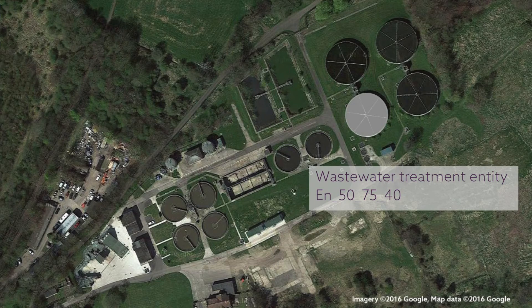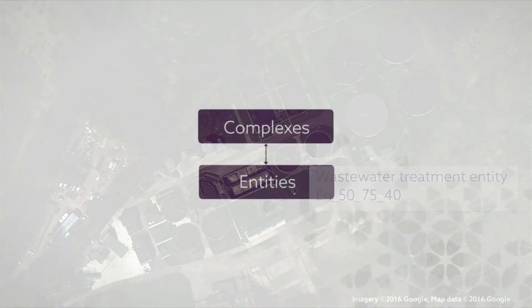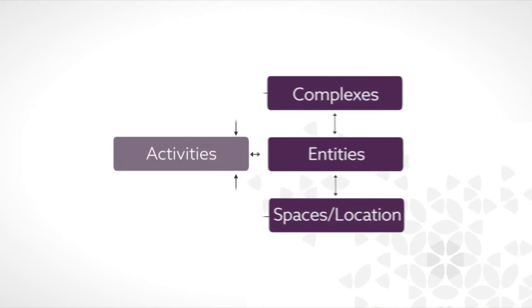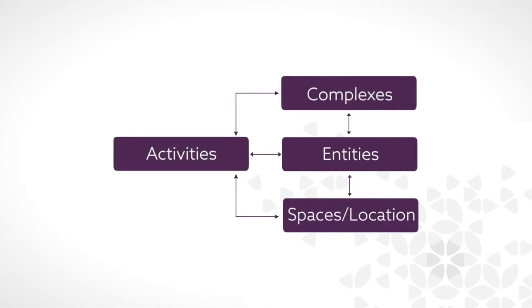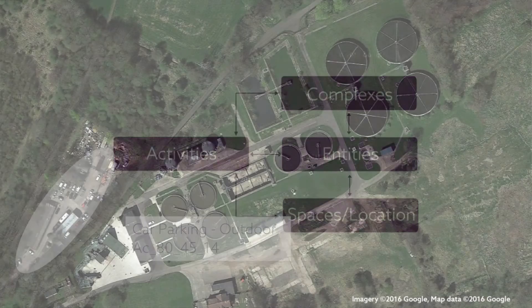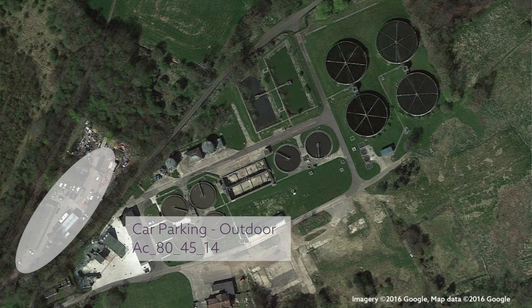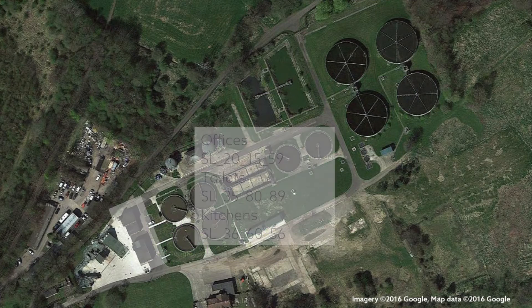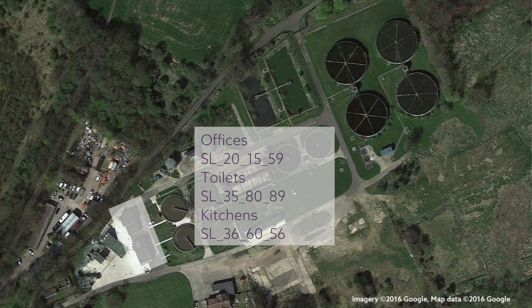A complex can also be described in terms of the spaces that it provides for different activities. For example, for people travelling to and from the complex there are car parking spaces, and within the buildings there are areas for offices, for meetings, toilet areas and kitchen areas. Each of these spaces can be described with a different code.